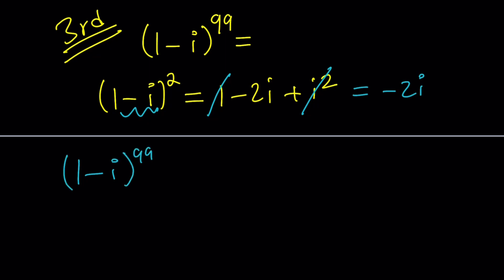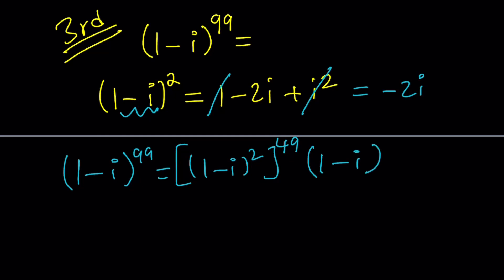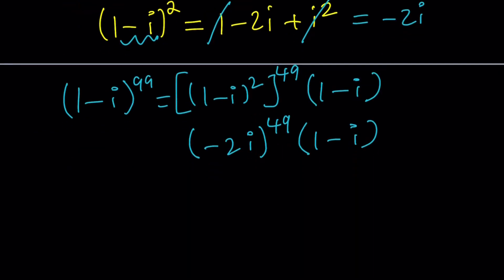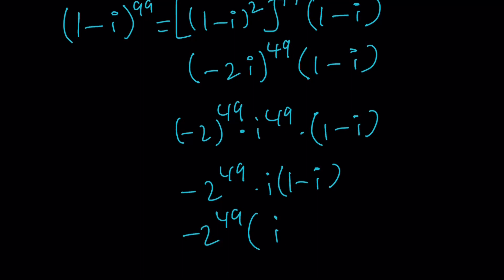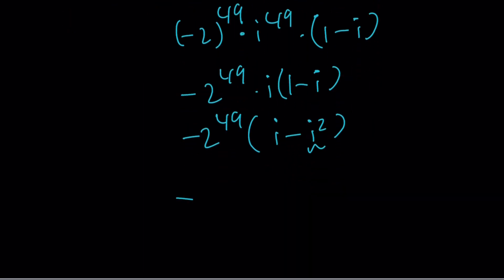We can write 1 minus i to the 99th power as 1 minus i squared to the power 49, which gives the 98th power, multiplied by an additional 1 minus i. Since 1 minus i squared is negative 2i, this becomes negative 2i to the power 49 times 1 minus i. That's negative 2 to the power 49 times i to the power 49 times 1 minus i. Since 48 is divisible by 4, i to the 49 equals i. Distributing: negative 2 to the 49 times i times 1 minus i gives i minus i squared, and since i squared is negative 1, the final answer is negative 2 to the power 49 times 1 plus i.